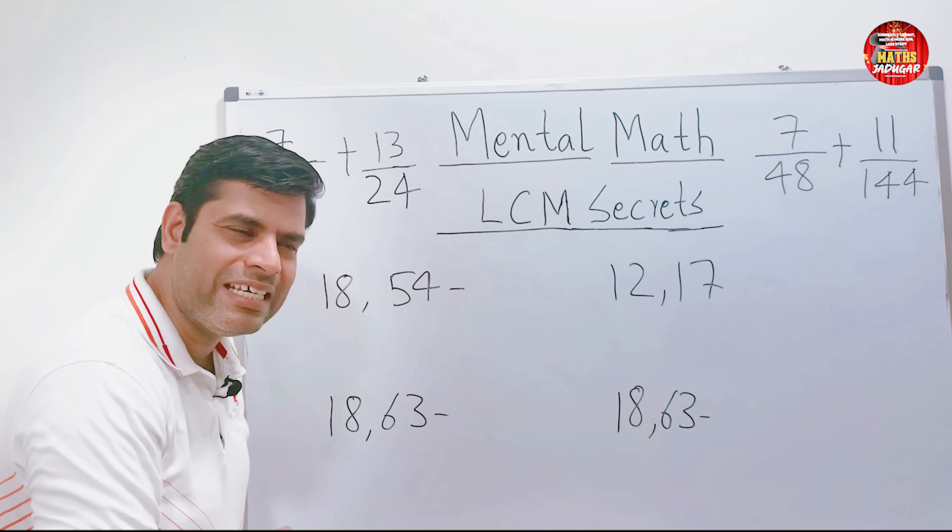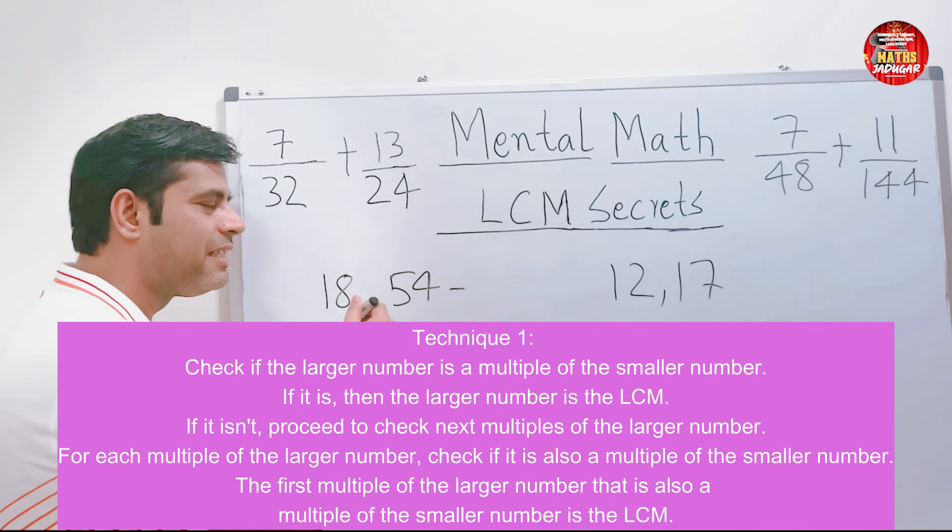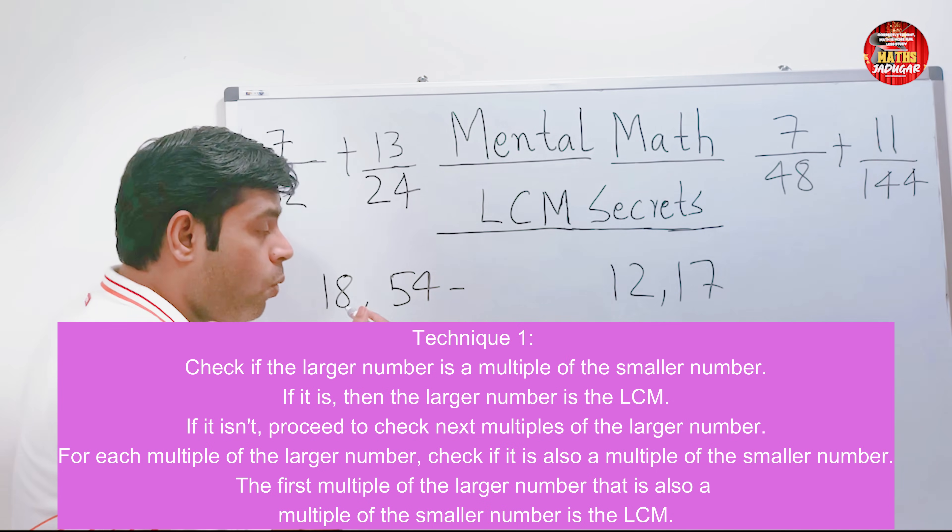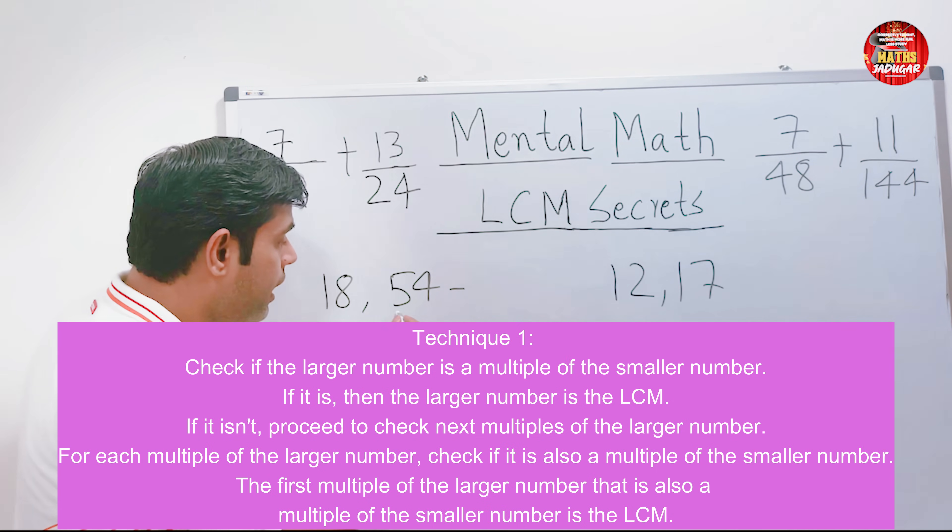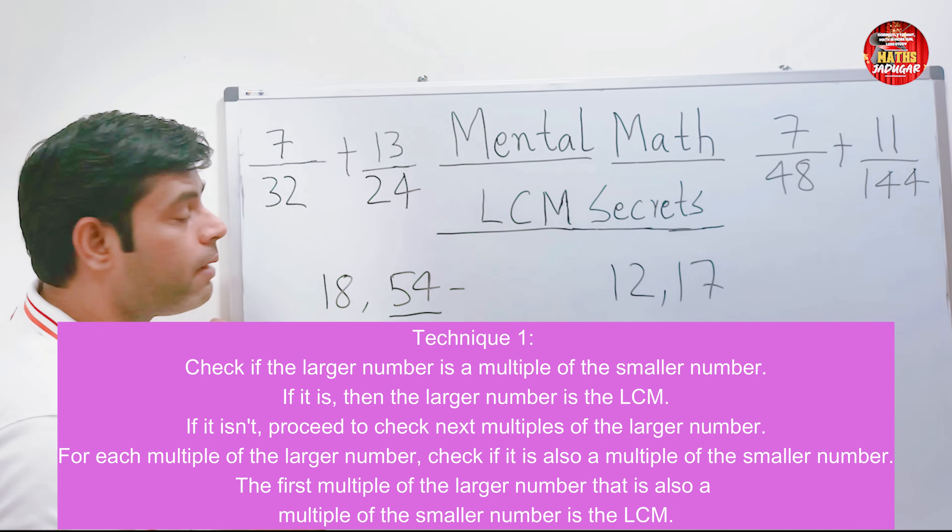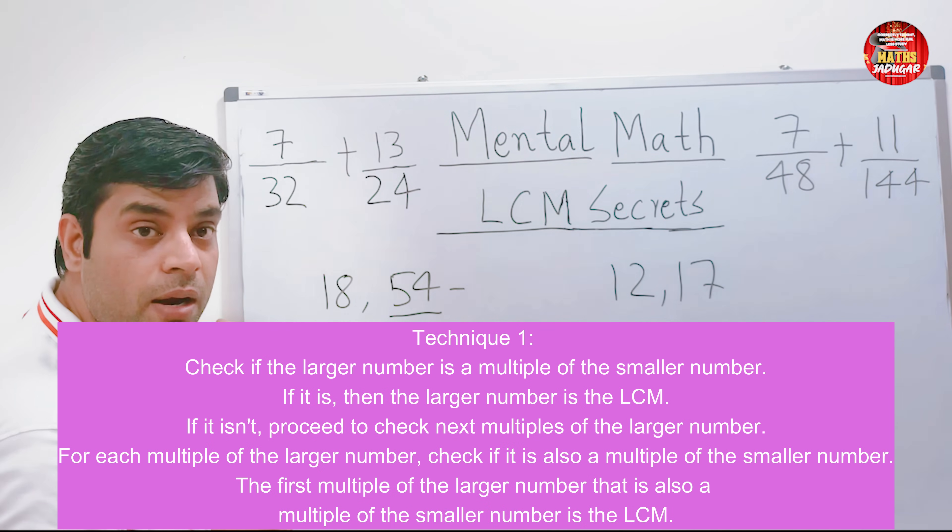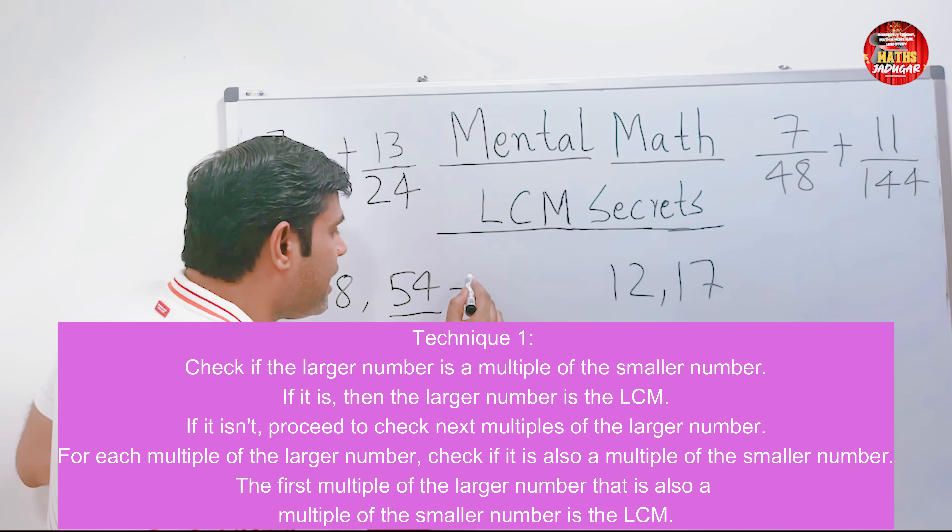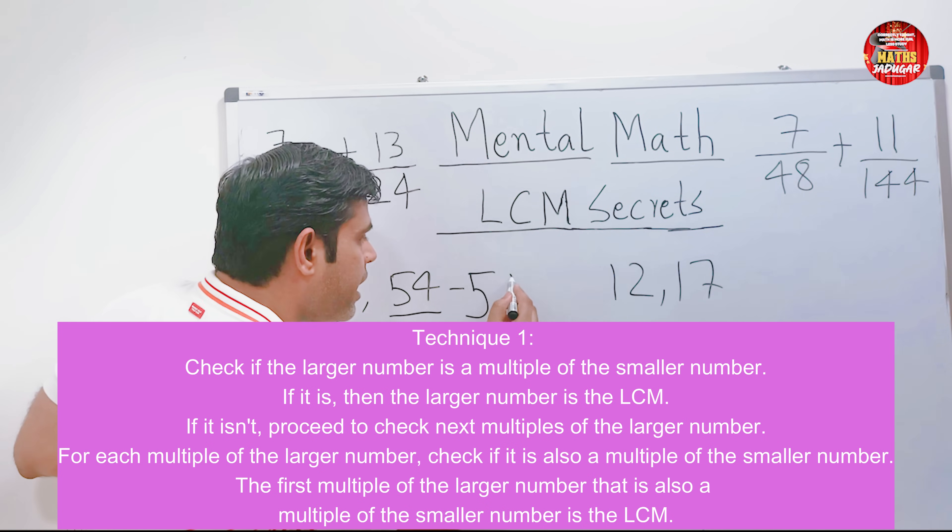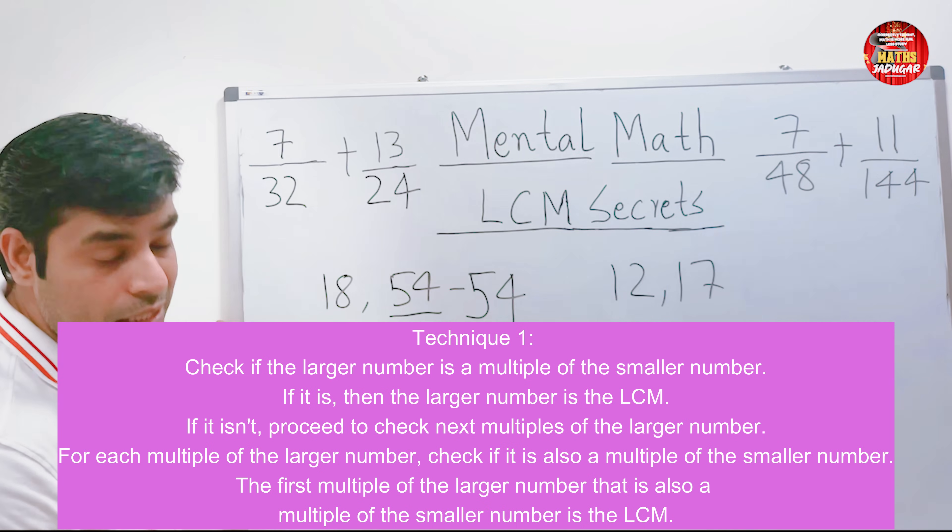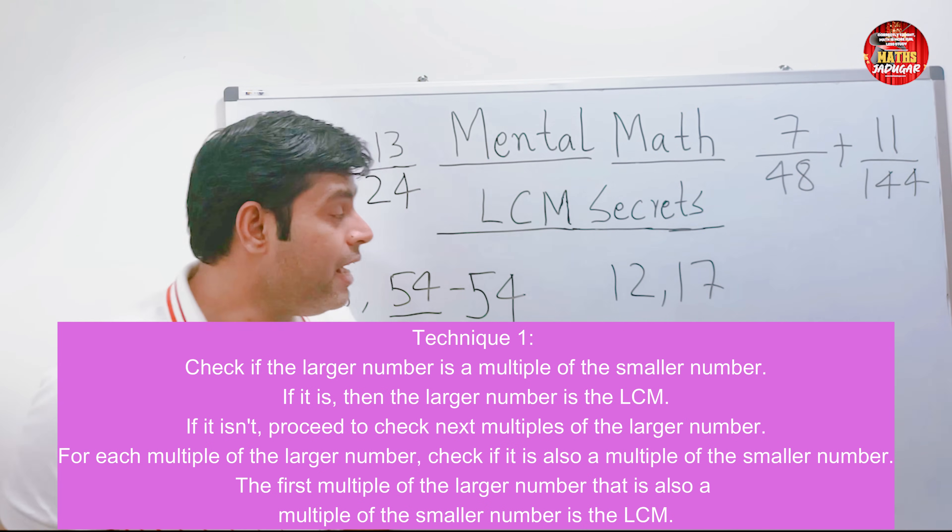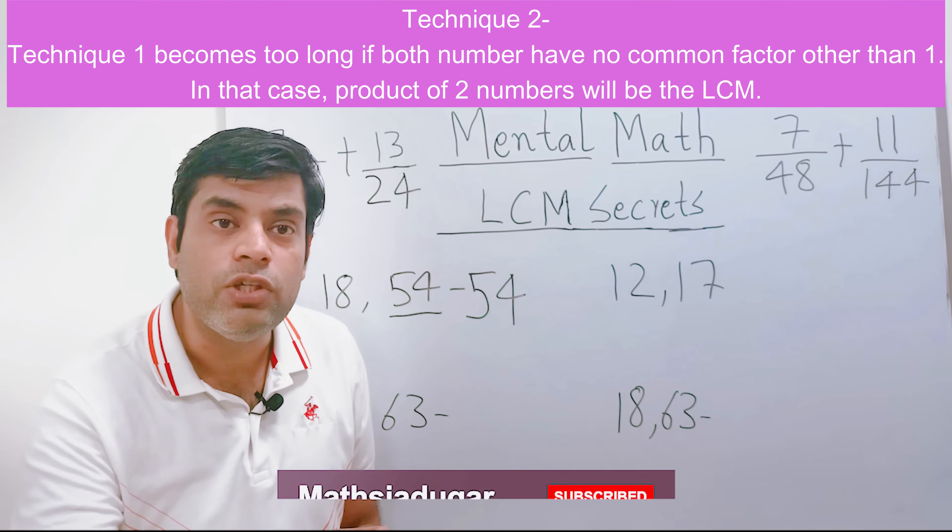Let us come back to our LCM part. What I told in lessons 3 and 4: see the big number, the biggest among two numbers, and tell me whether it is a multiple of the smaller number or not. If it is, then that is the answer. So you got your LCM in one shot if you're lucky.